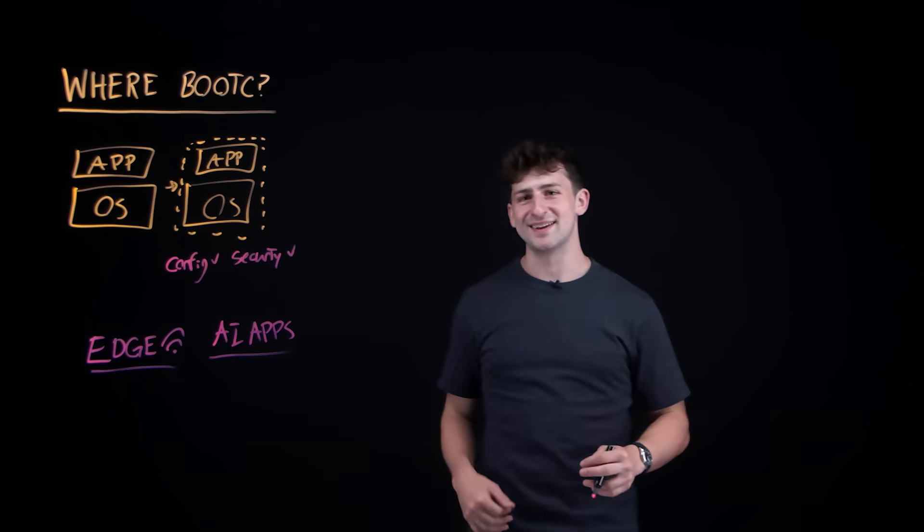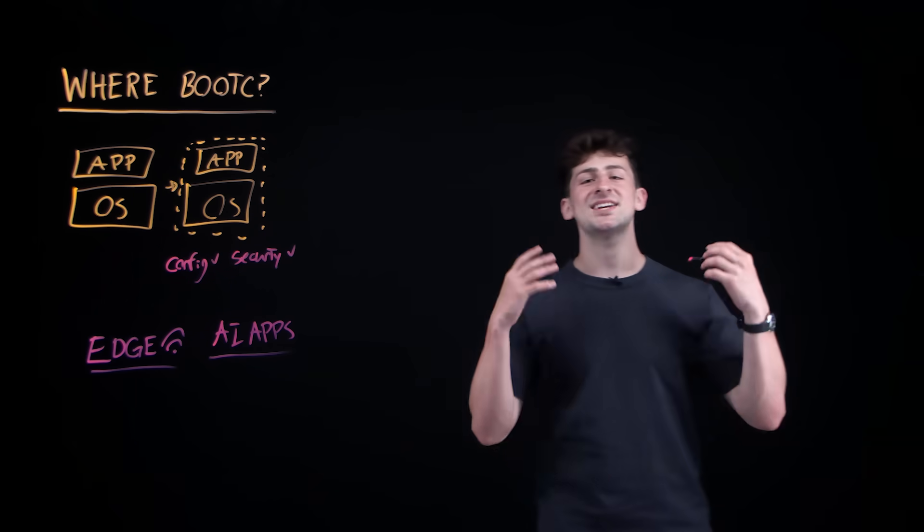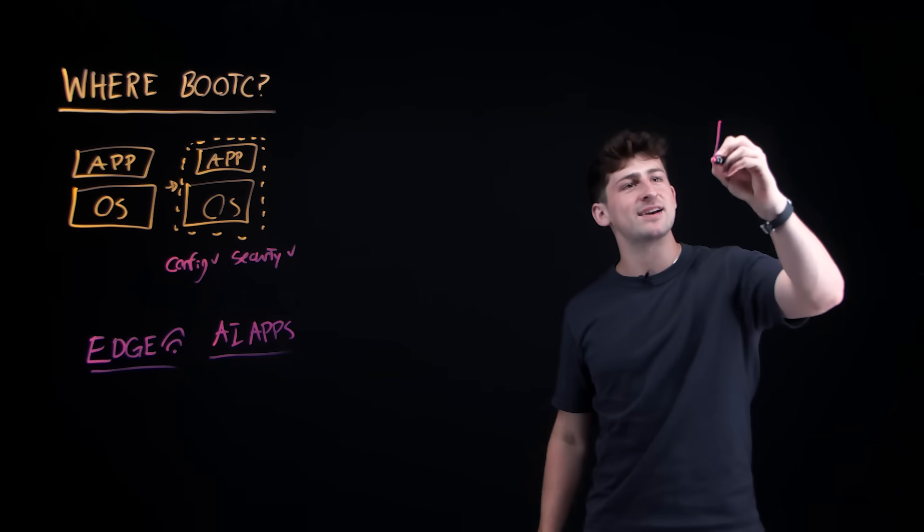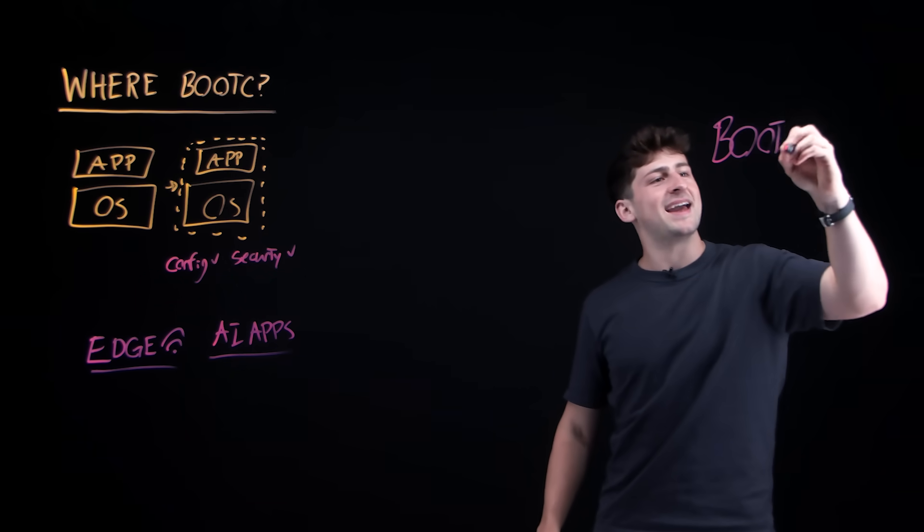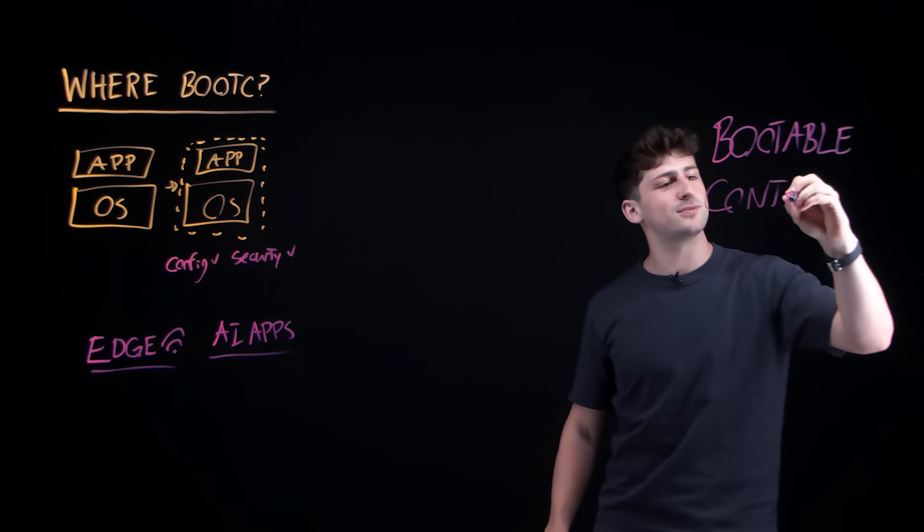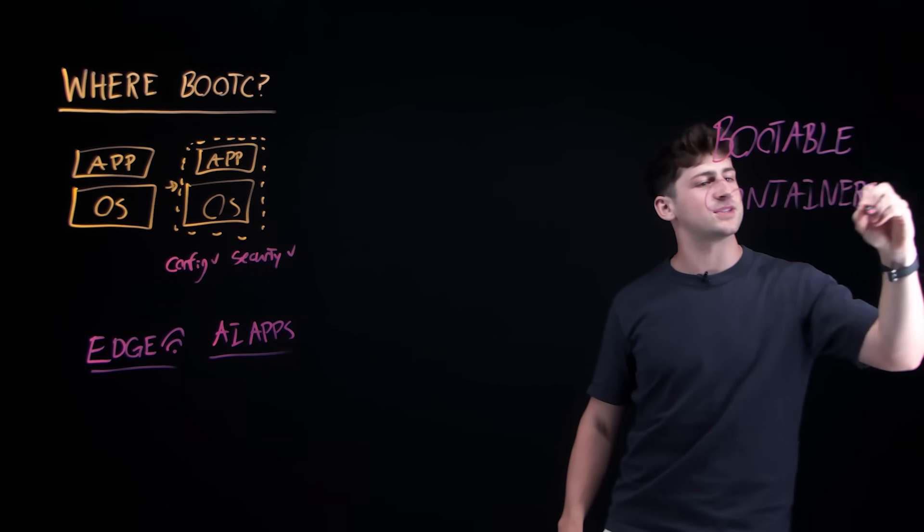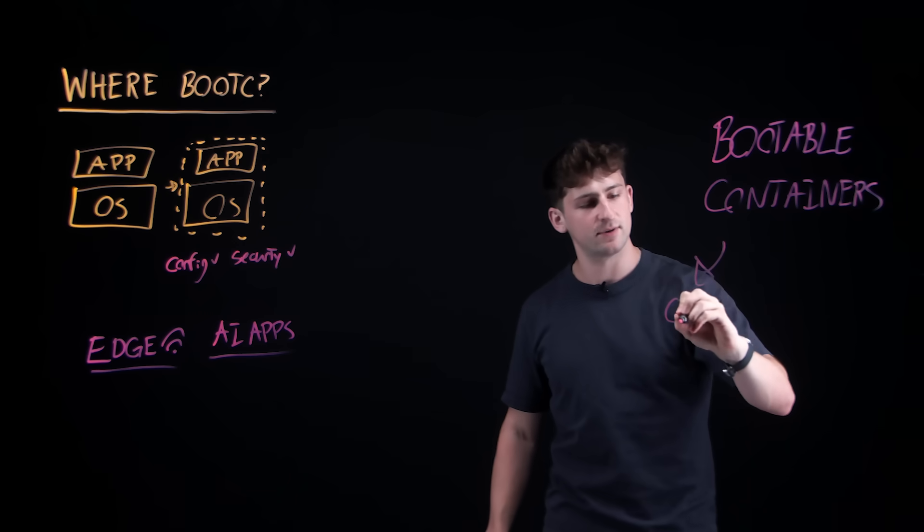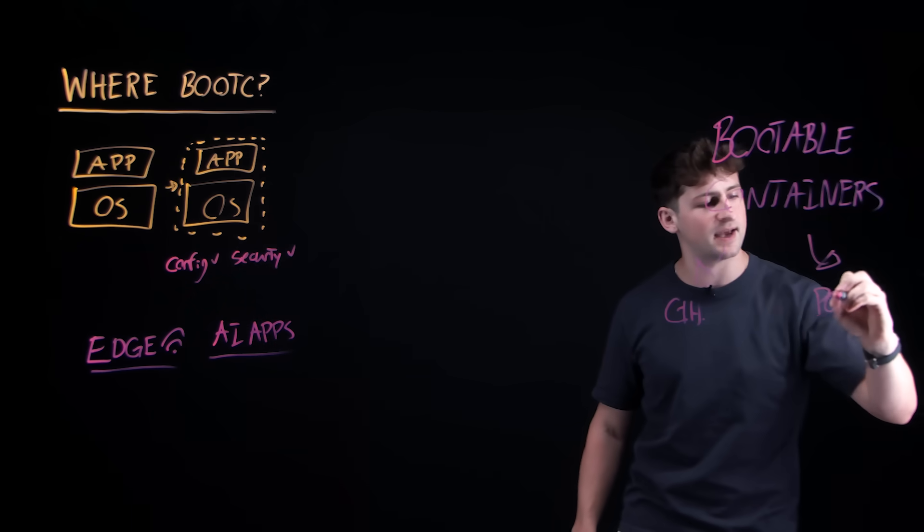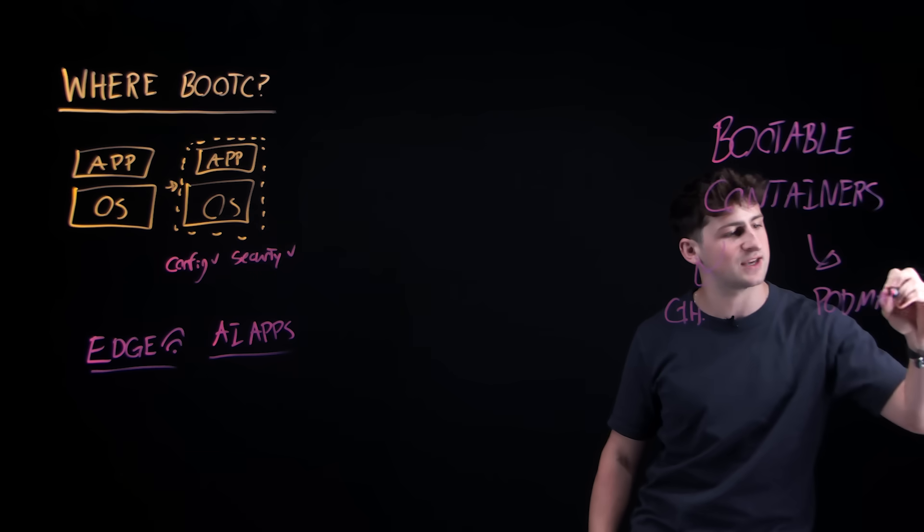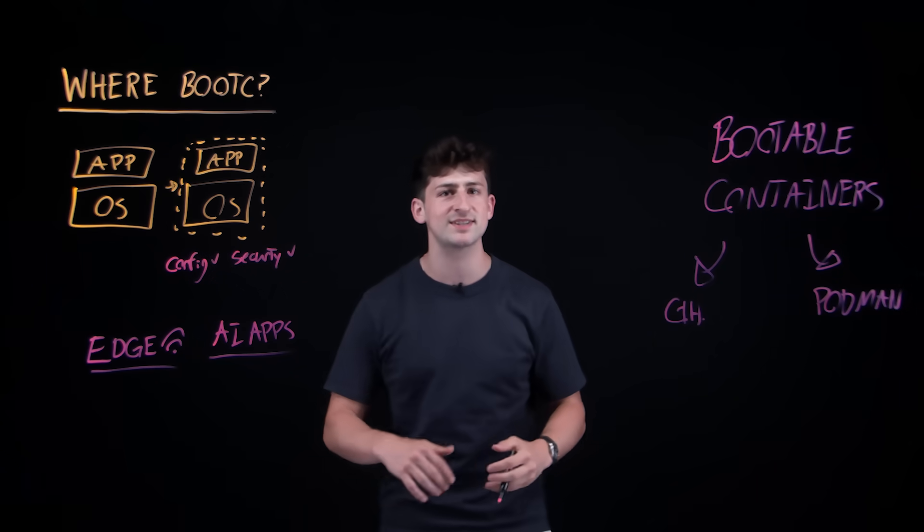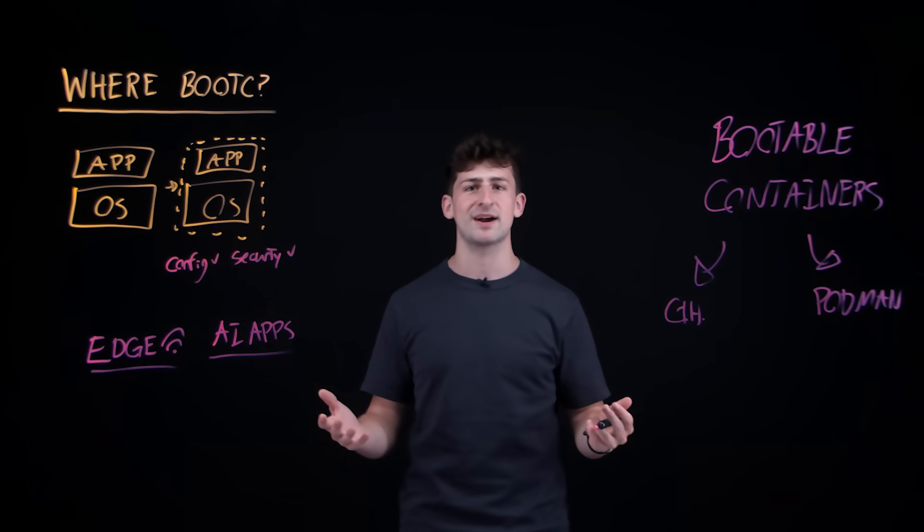But no matter what you want to deploy, this open source project lets you manage entire operating systems the same way we manage applications, helping to scale, to automate, and to make our lives just a little bit easier. So I encourage you to check out bootable containers online on repositories such as GitHub, but also using the container engine Podman. So Podman has on its desktop application a specific extension that can help you get started working with bootable container images, testing them out, and deploying them wherever you deploy your apps.